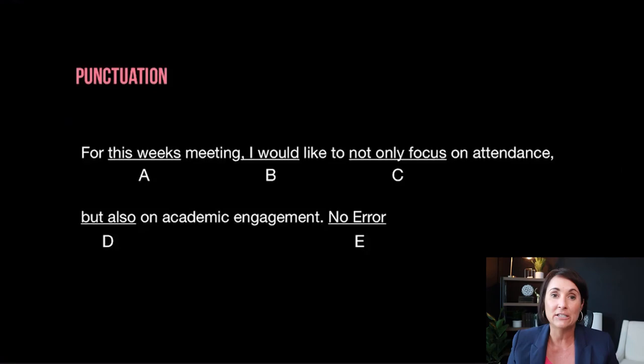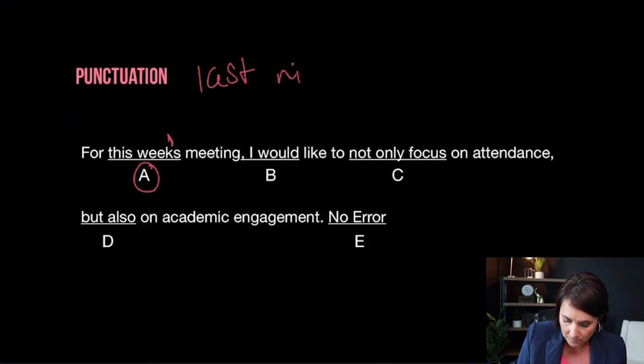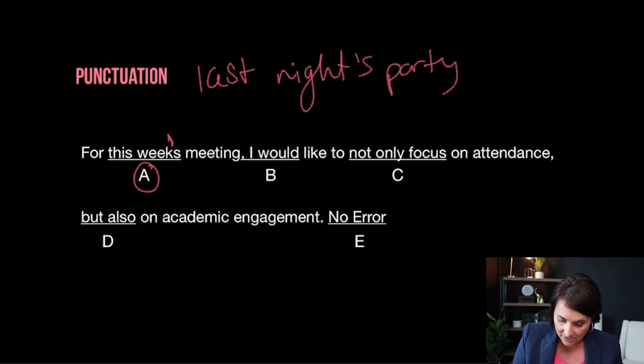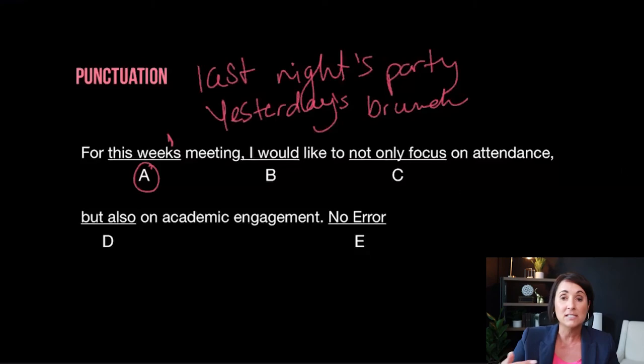Now there's a couple more things — we're talking about punctuation here. People do this all the time, especially in emails. When you type quickly, I'll say things like "this week's meeting" or "yesterday's meeting" or "last night's video." The week owns the meeting in this case. "Last night's party was awesome," "yesterday's brunch was lovely." These periods of time own the situation that's going on.